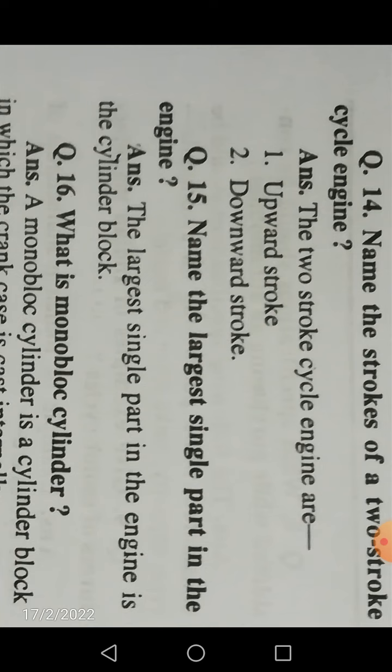In a four-stroke engine, the four strokes — suction, compression, power, and exhaust — are completed in two revolutions of the crankshaft, whereas in a two-stroke engine they are completed in one revolution. So for a four-stroke engine you get one power stroke per two revolutions, and for a two-stroke engine one power stroke per revolution. That is why the power of a two-stroke engine is almost double that of a four-stroke engine — to be precise, 1.875 times.